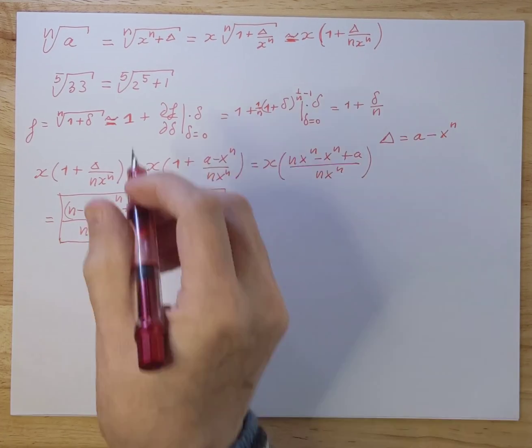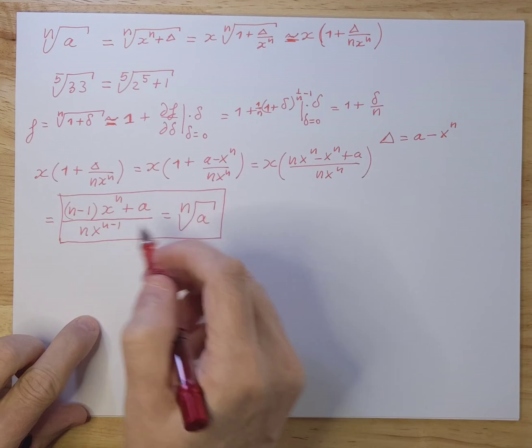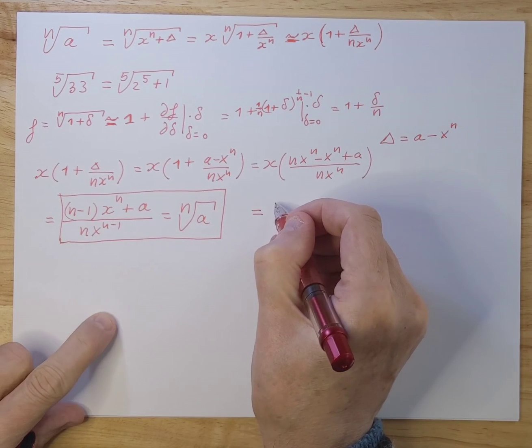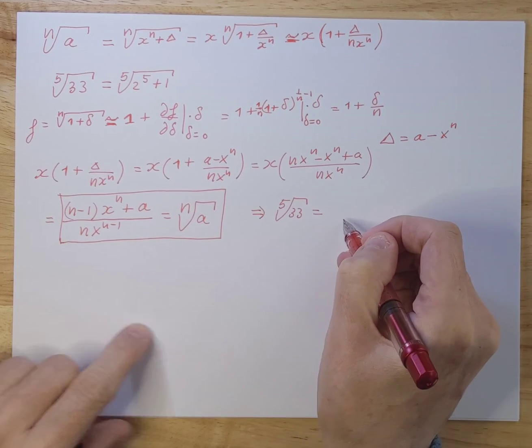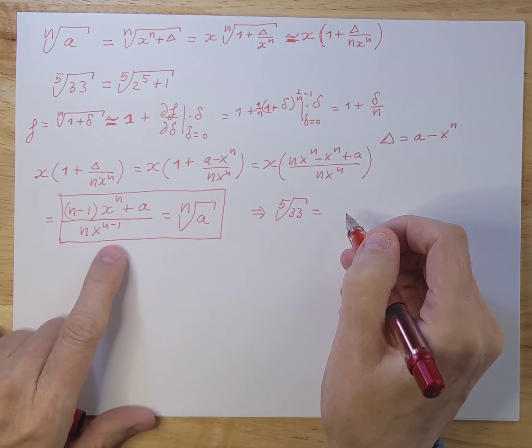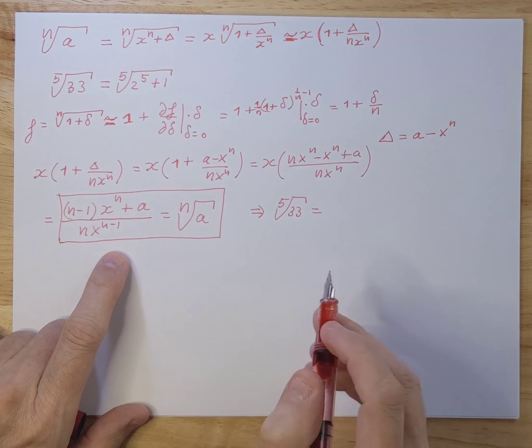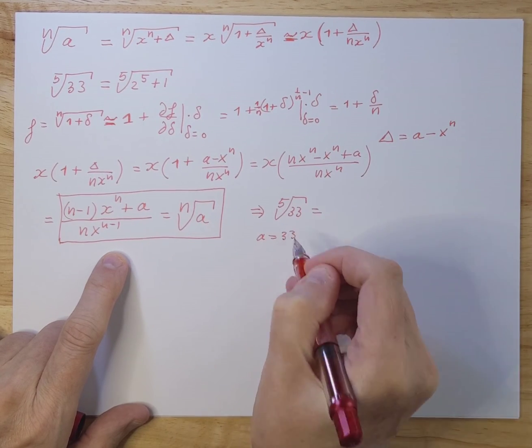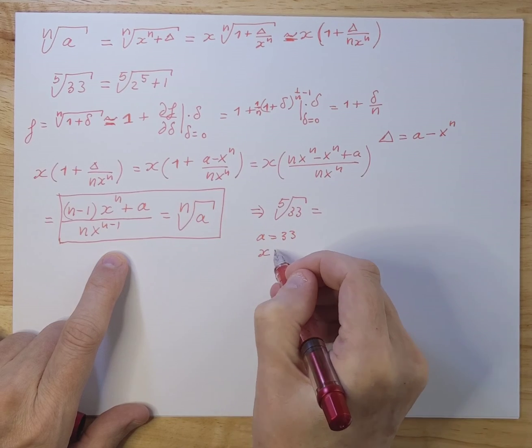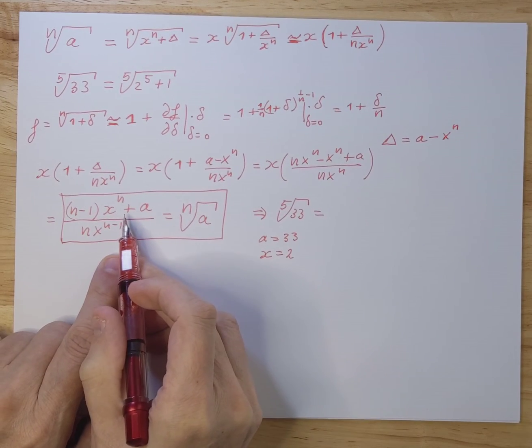So let's do that for this example here now, because we have this. So let's try to do the fifth square root as an example of 33. What we now have to realize that a is 33, if we fill that out here, x equals 2, because 2 to the fifth is 32.